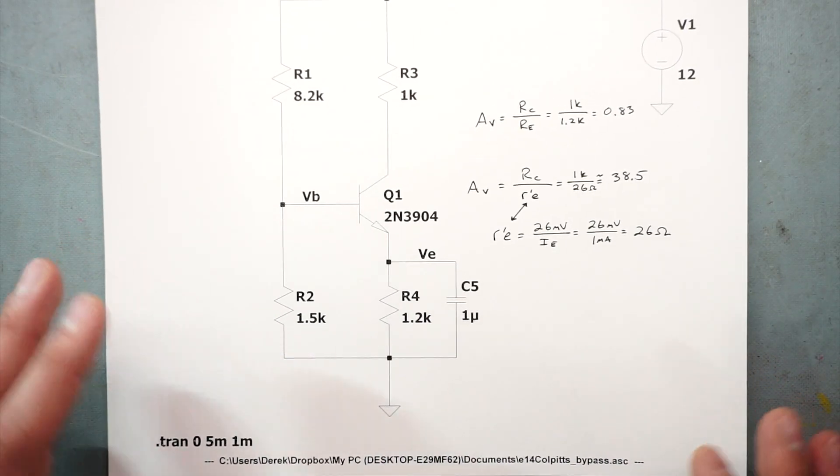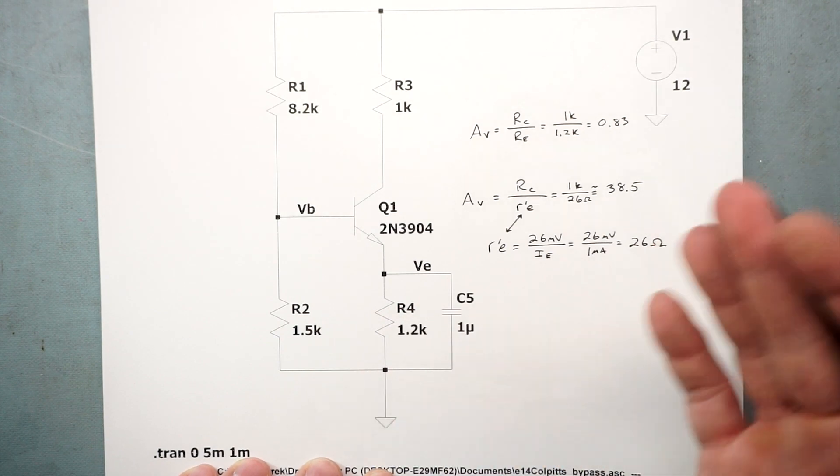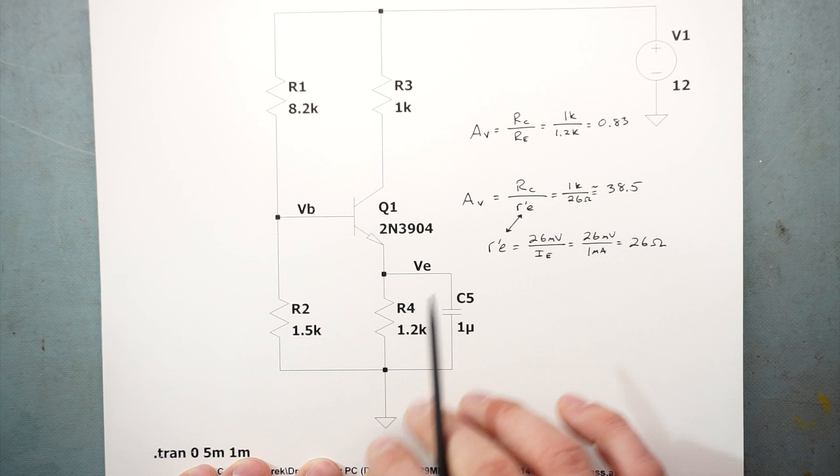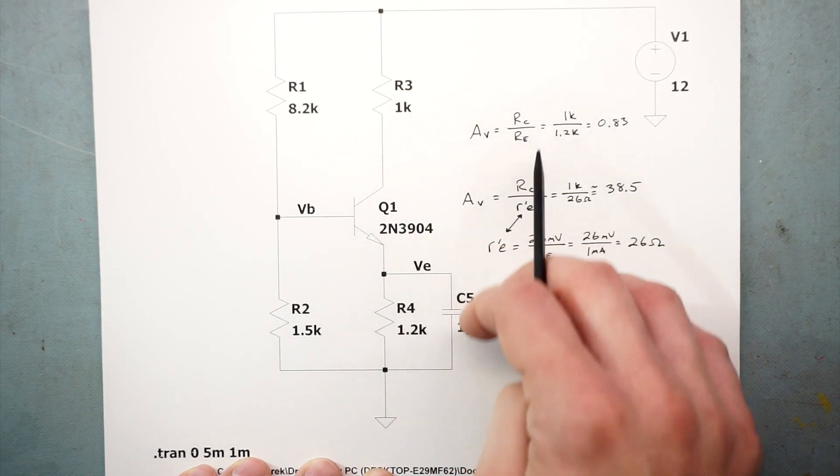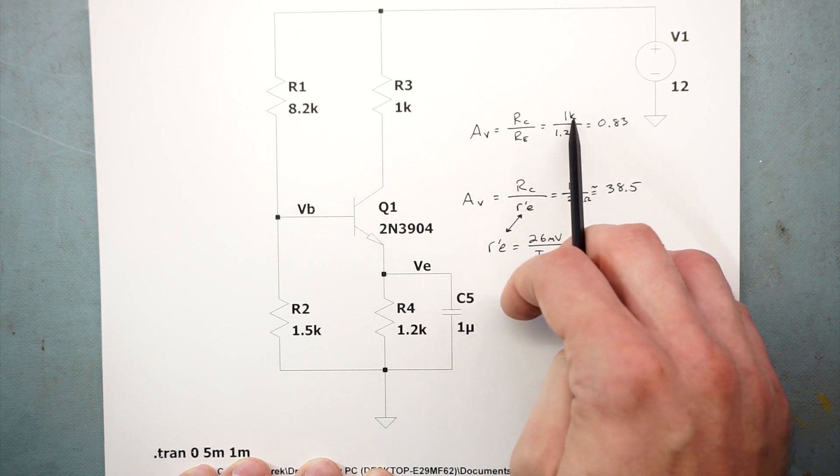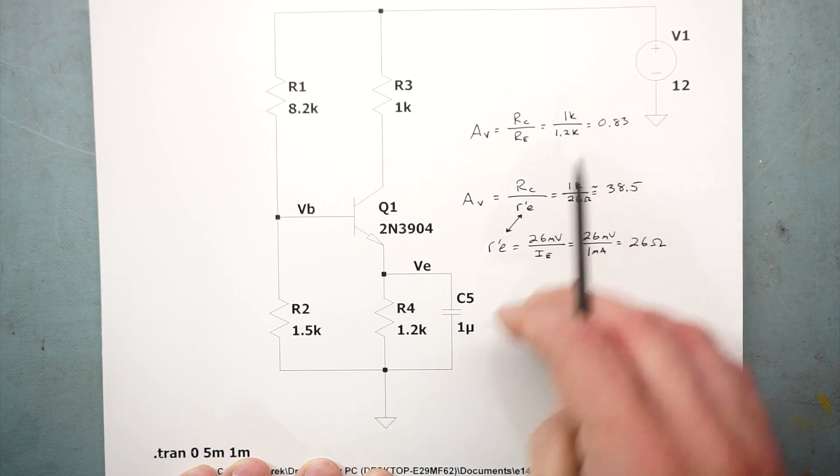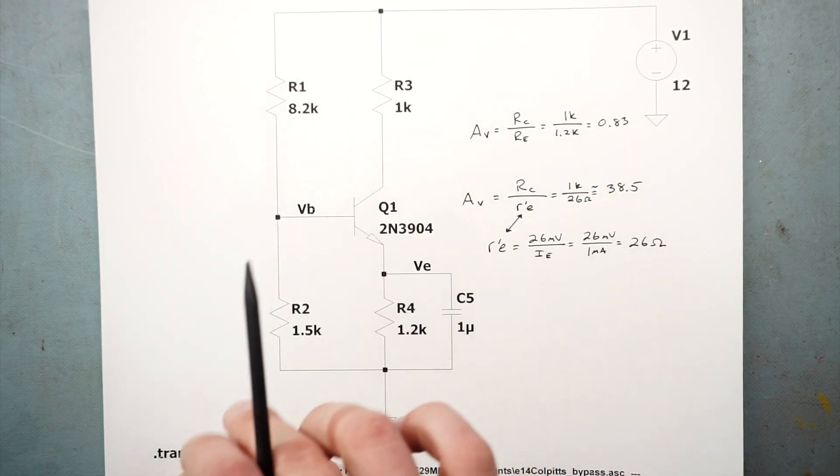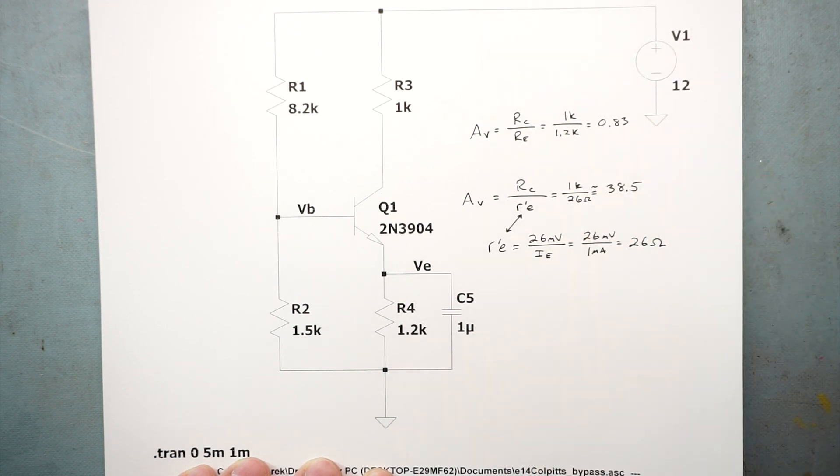Now we're going to look at the gain of the amplifier. Barkhausen says that our gain needs to be greater than or equal to one. Just with the DC conditions that we just looked at, the voltage gain is equal to the ratio of these two resistors, the collector resistor and the emitter resistor. I have 1k over 1.2k which gives me a gain of 0.83. If I were to connect my tank circuit and everything to this, it would not oscillate because we are not greater than or equal to one for our gain. But we're going to do a little trick.